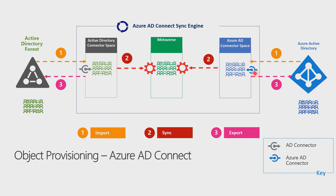The export is happening in sequence. You can configure another instance of the sync engine in staging mode on another machine, and that does exactly the same cycle that we just saw, but it does not execute the export phase in the data sources. And this completes the synchronization flow.